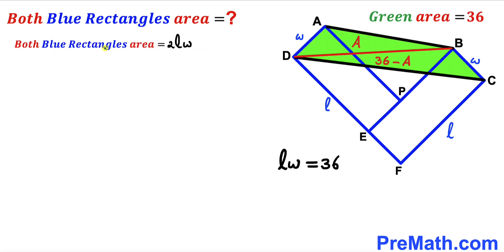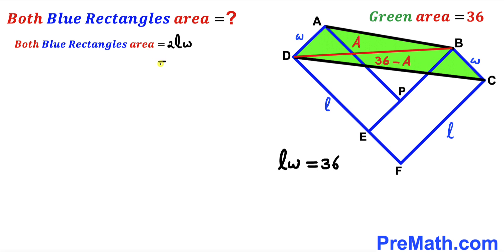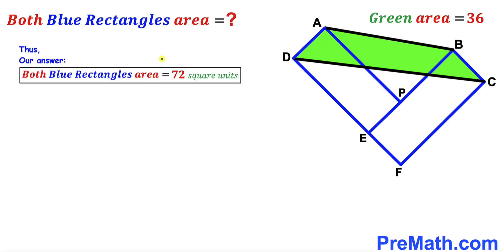Here's our final step. Recall that the combined area of both blue rectangles is 2 times LW. We have determined that LW equals 36, so substituting: 2 times 36 gives us 72 square units. The area of both blue rectangles combined is 72 square units — that's our final answer. Thanks for watching and please don't forget to subscribe.